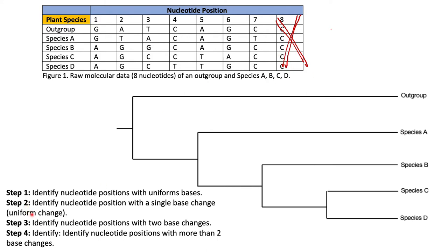Step number two is to identify nucleotide positions with a single, uniform base change. This can get tricky. At nucleotide position one, we go from G, G to A, A, A. Once the change to A occurred, it stayed A — it remained in all species to come after. This is a uniform change: one ancestor changed from G to A, and that change remained in all its descendants. So position one applies to step two.